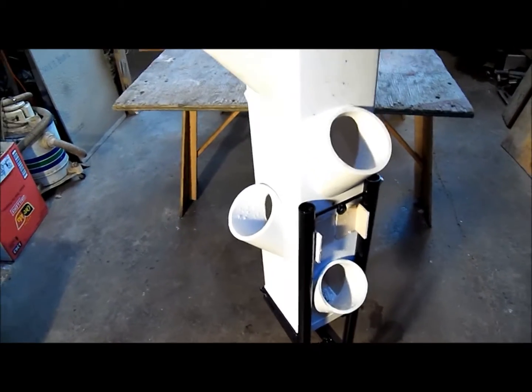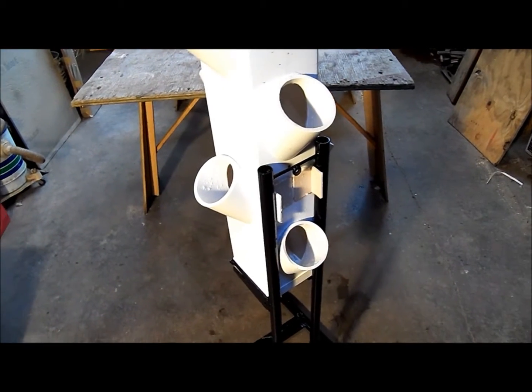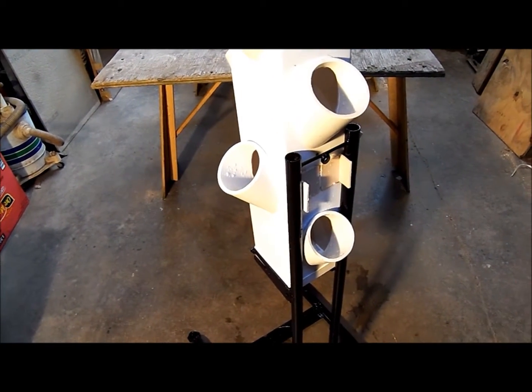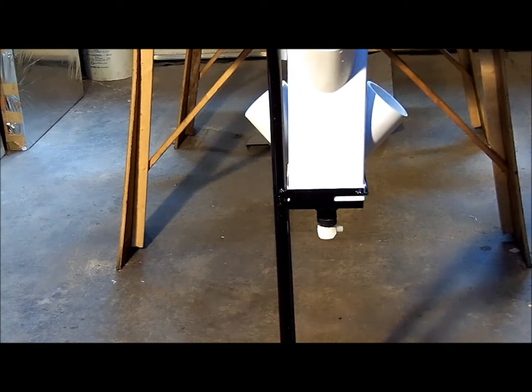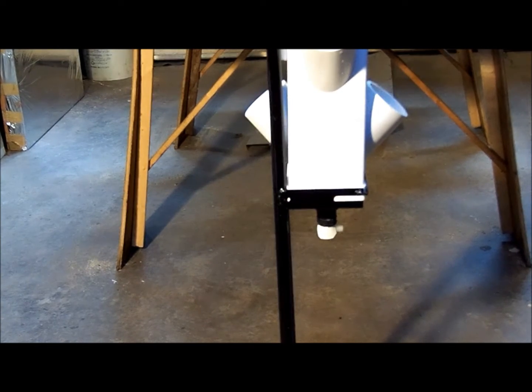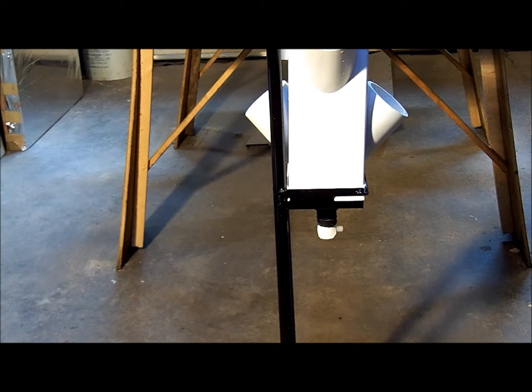It comes in handy because I've made a bunch of changes to this, and being able to separate it from the support is really nice. I thought I'd just show you here how easy this comes out of the base. I've removed that screw from the back, and I just tip the tower forward and lift it out of the cradle. And that's all there is to it.